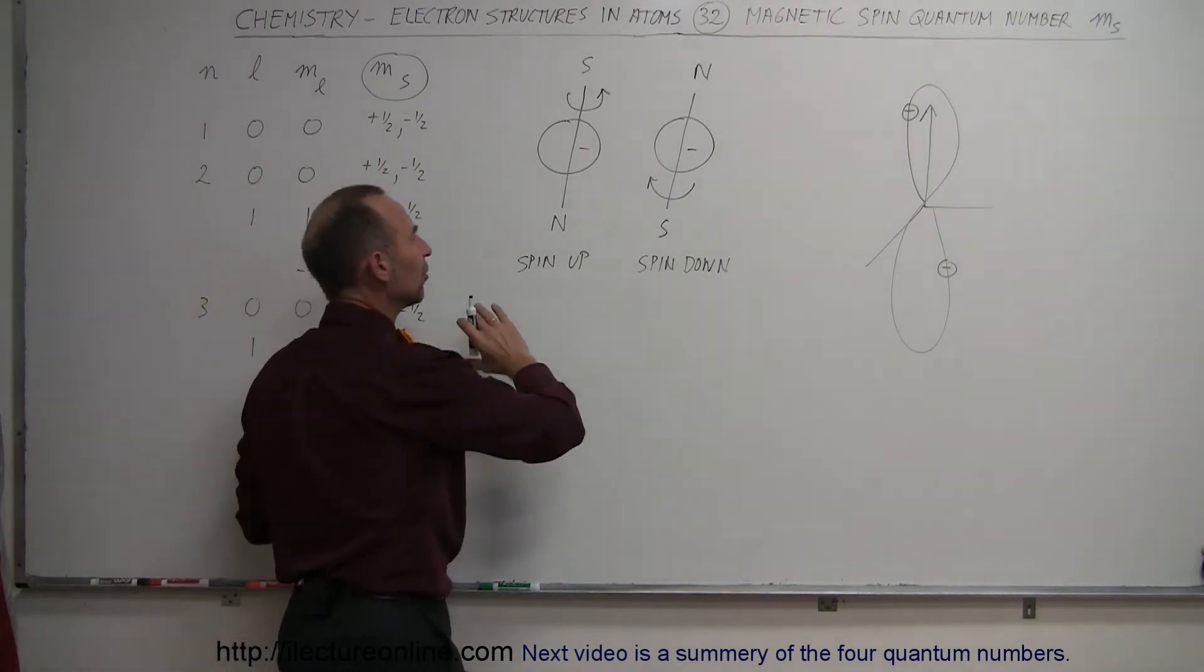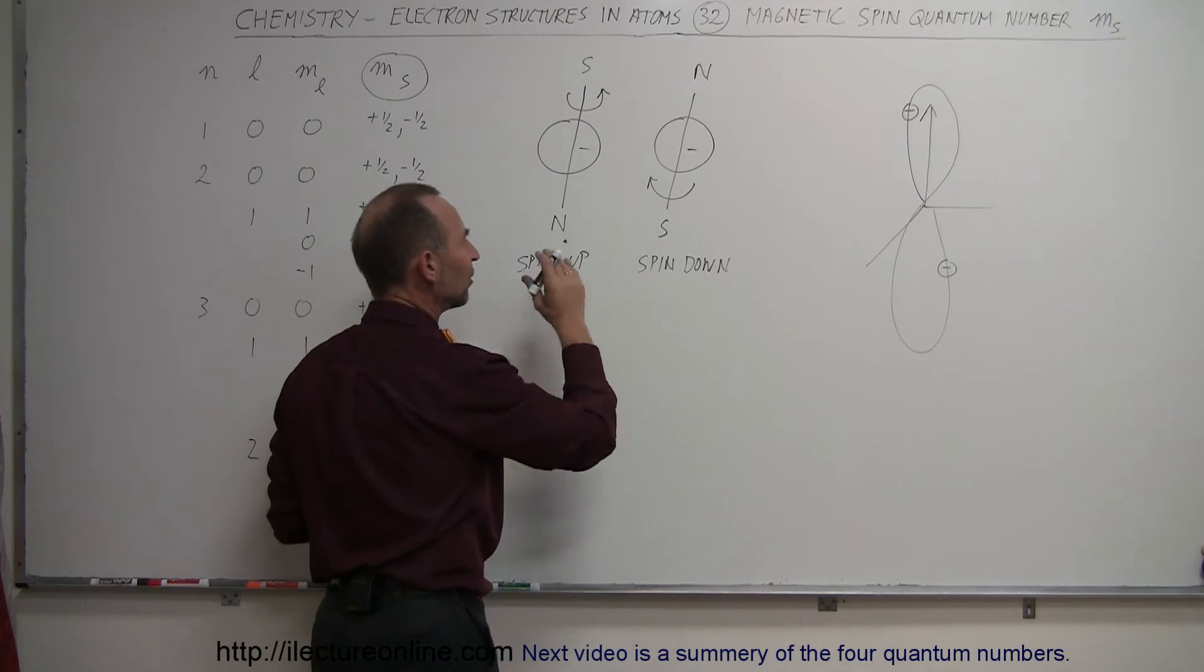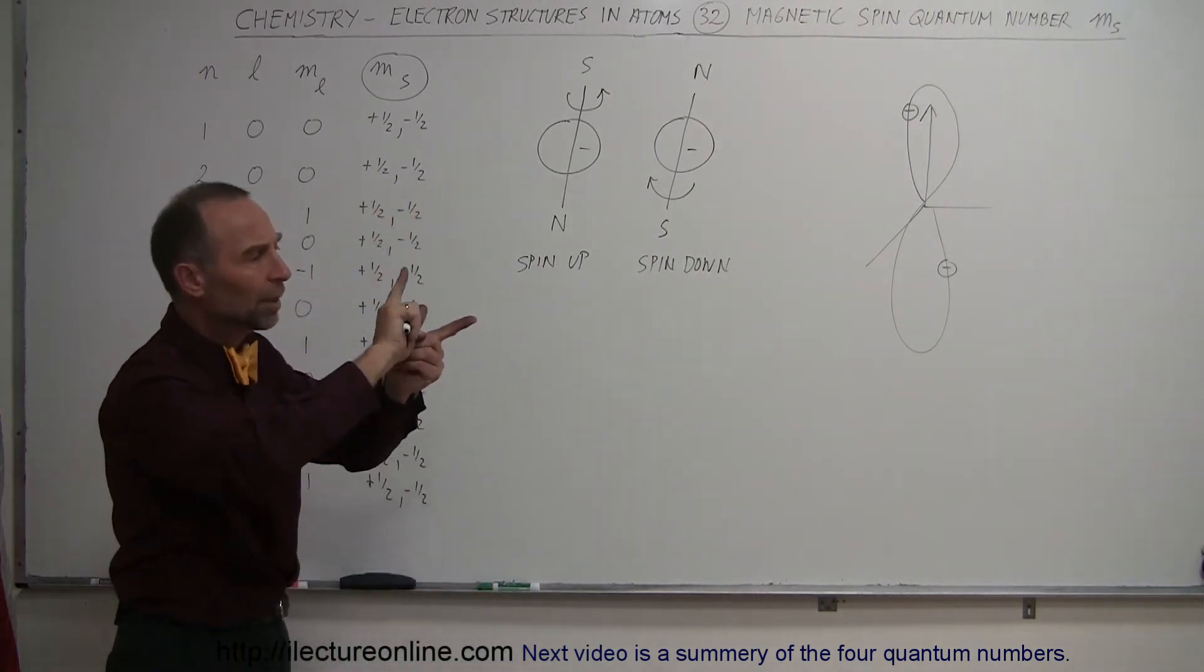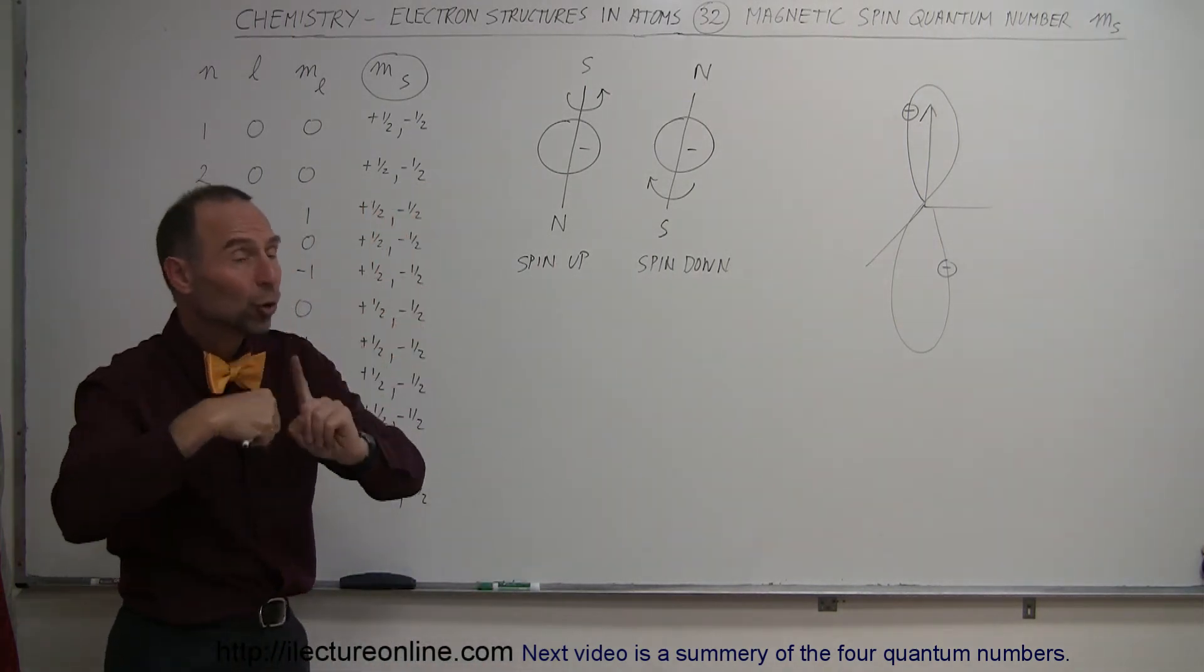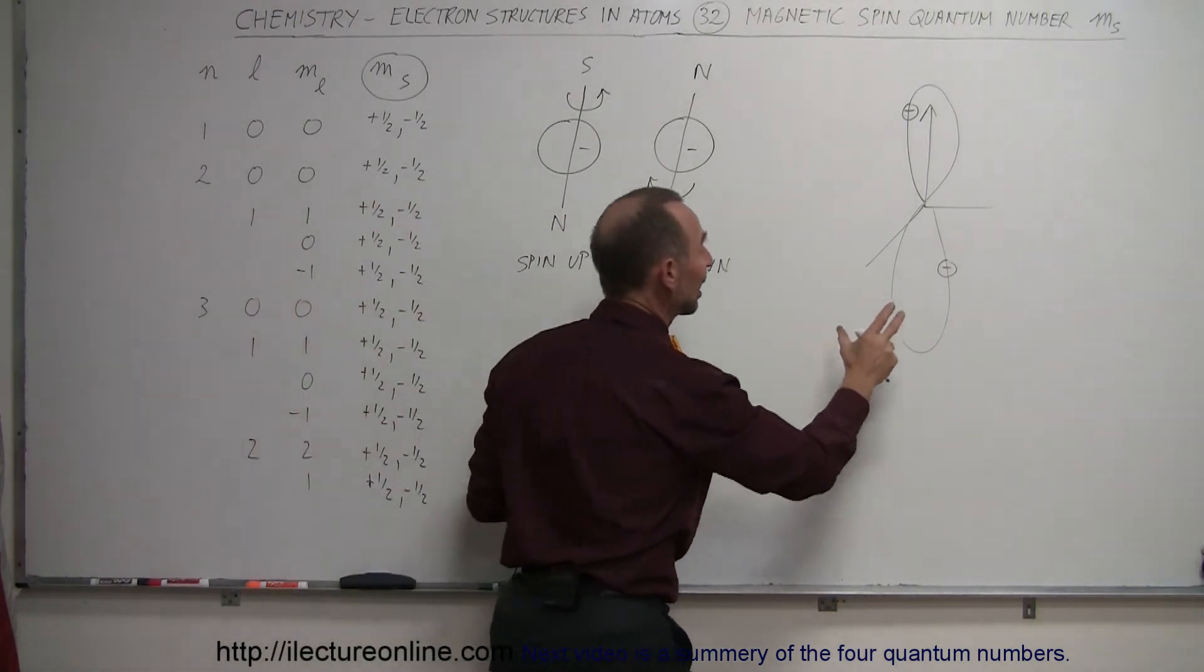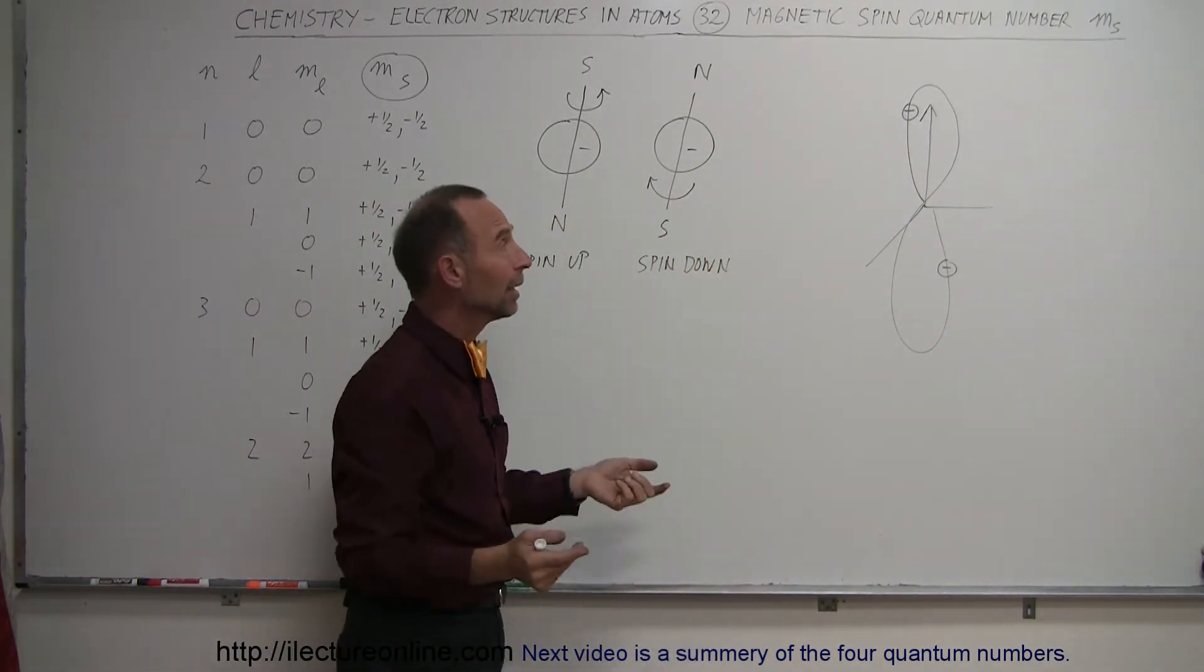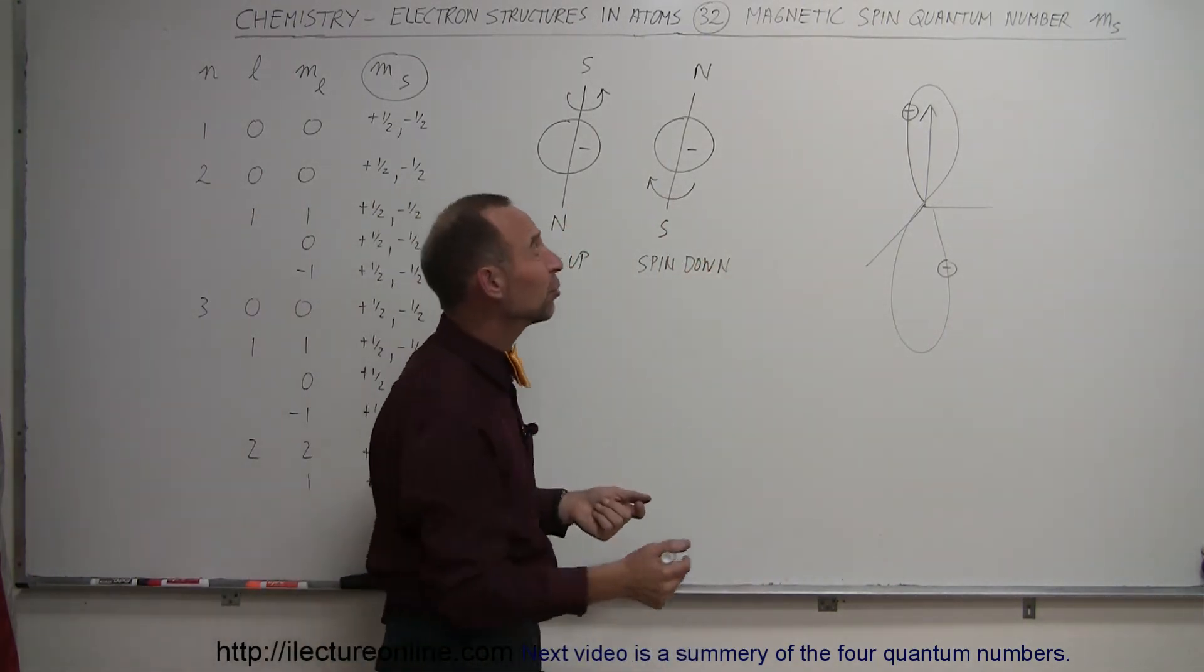It's the fact that there's a property of the electron where they can be spinning up or spinning down, where they can be spinning in opposite directions, that allows two electrons to exist in each orbital. For example, the p orbitals—there's three of them in total.